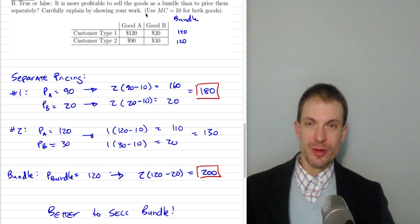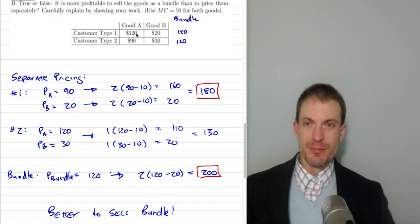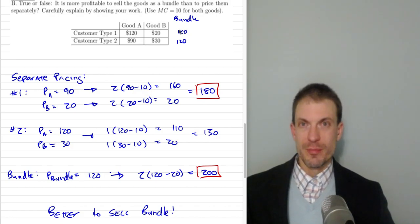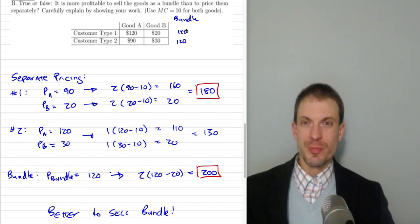Now, what happens with a bundle? I've added a column to our table summing over maximal willingness to pay. Consumer of type 1 would pay $120 for good A and $20 for good B, so they would pay $140 to buy both jointly — that's the maximum bundle price they'd pay. Consumer of type 2's maximum bundle price would be $120. Which price do I want to set? If I set the bundle price at $140, I'll sell only one bundle.